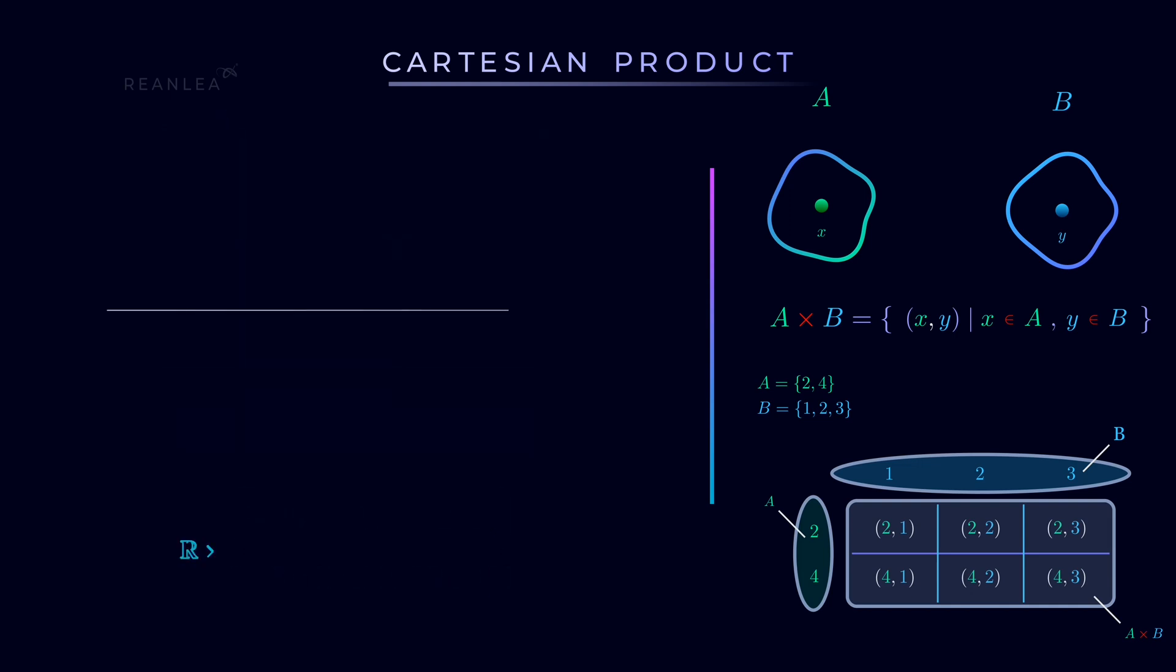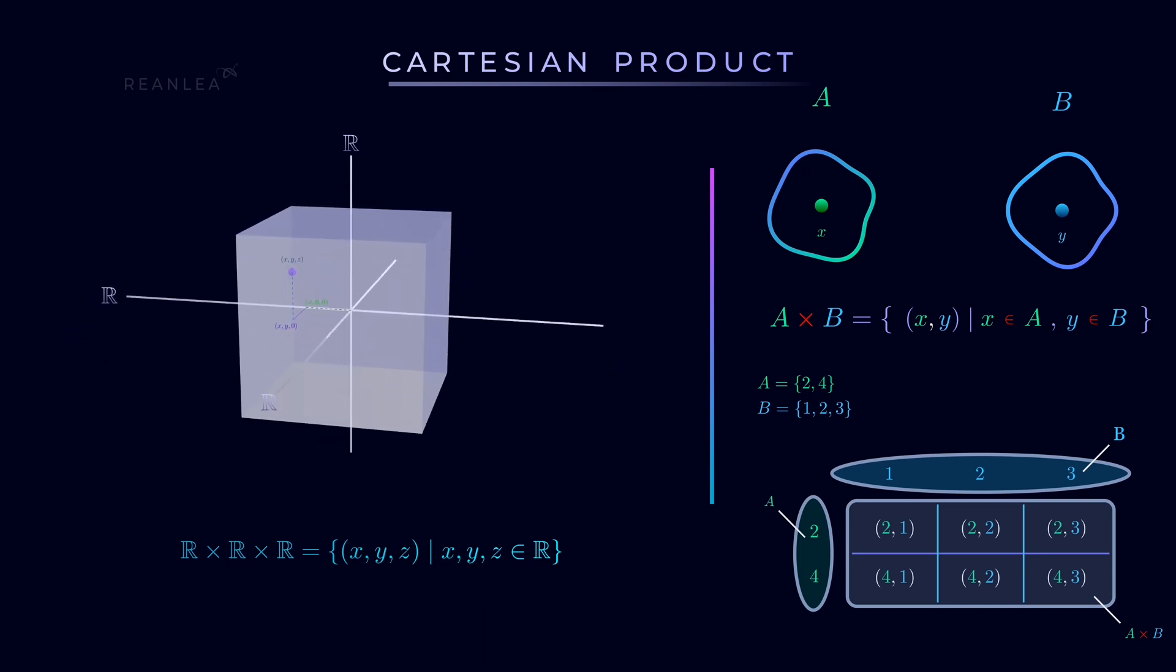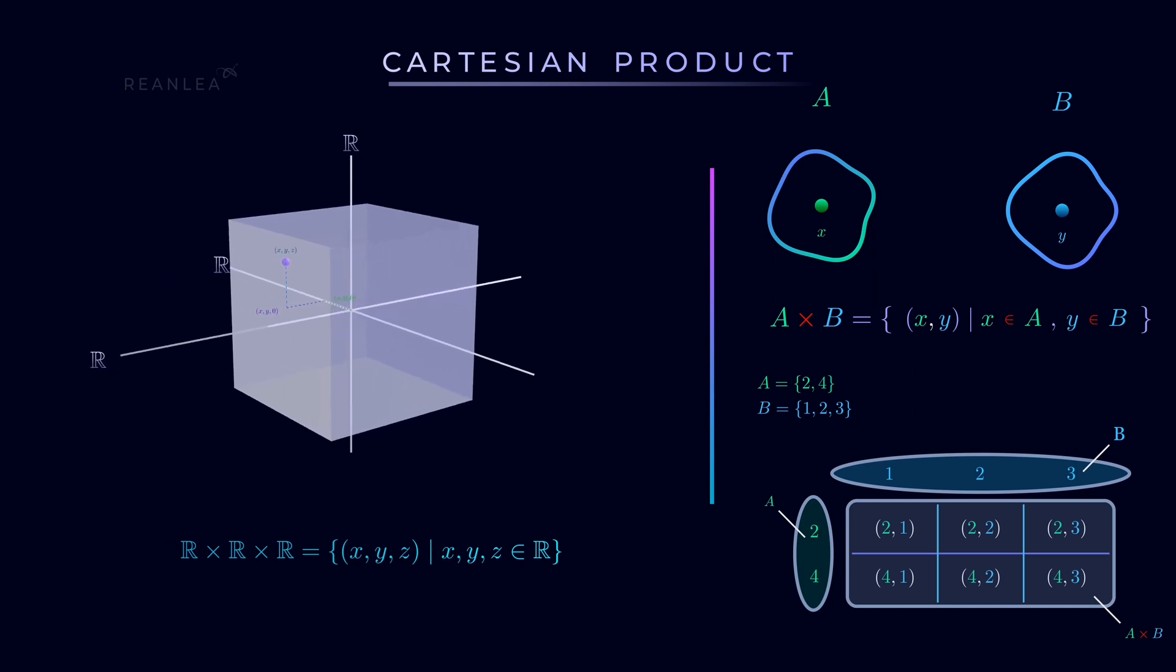And similarly, we can represent the space R³ as a collection of elements of the form 3-tuple (X, Y, Z), where X, Y and Z are all real numbers. And here, this is how we can represent each of its points.